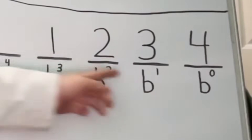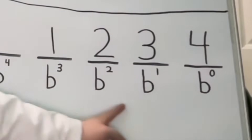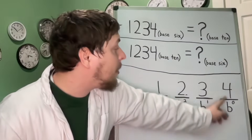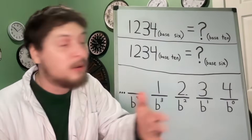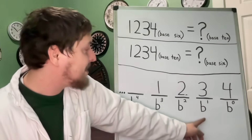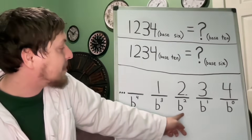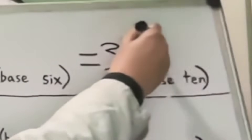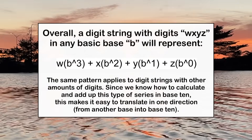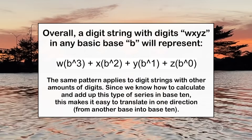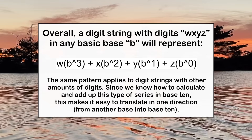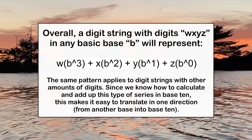In general, other numbers equal a bunch of powers of the base added together, each raised to some coefficient which are the digits appearing in the string. Here's an example: in base six, the string 1234 means four ones (since six to the zero is still one), plus three sixes, plus two thirty-sixes (six squared), plus one 216 (six cubed), and that gives us 310. In general, translating a digit string from another base back to base 10 is as easy as multiplying each digit by the base number to the corresponding power and adding them all together.